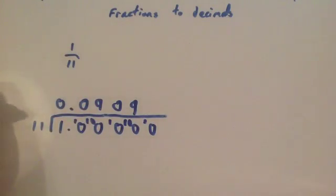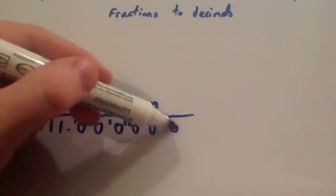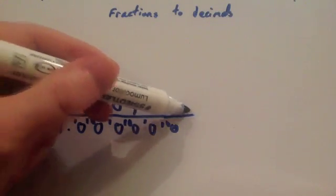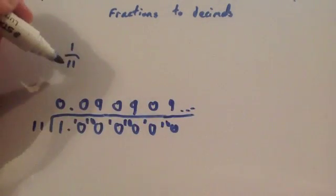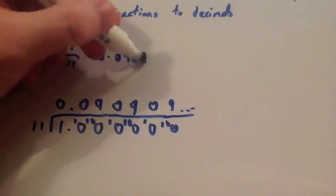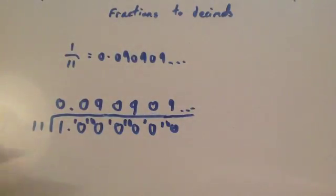Remainder 1. You can sort of see what's happening here. 11 into 10 doesn't go. Remainder 10. 11 into 100 goes 9 times. And so on and so on. So, 1 eleventh is equal to 0.09, 0.9, 0.9 and so on. To show this as a recurring decimal, what I would do is,